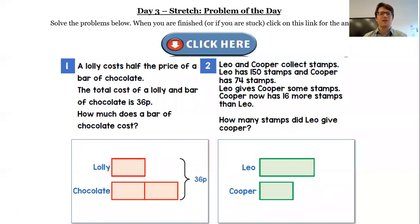Day 3 problem of the day. A lolly costs half the price of a bar of chocolate, and the total cost of a lolly and bar of chocolate is 36p.